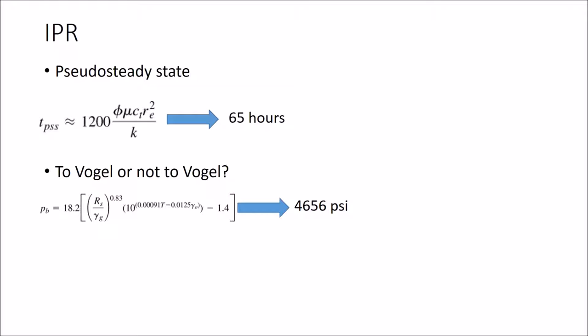To Vogel or not to Vogel, you might ask? Since we never hit the bubble point pressure throughout the reservoir's life, Vogel is never used and instead Darcy's equation was used.